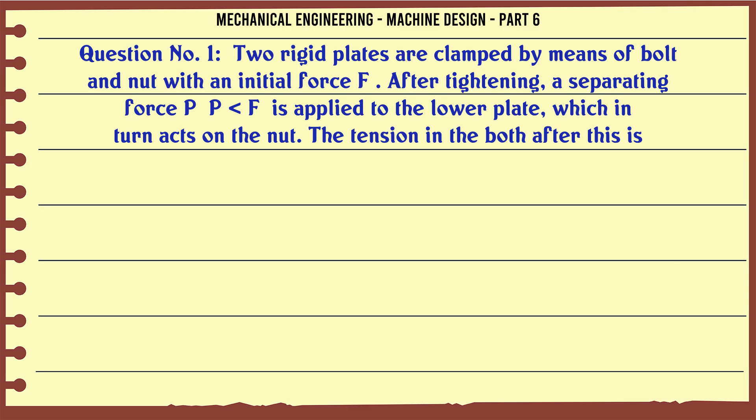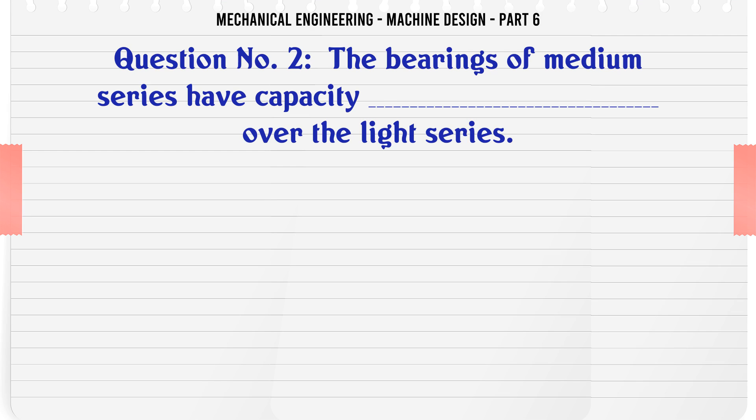Two rigid plates are clamped by means of bolt and nut with an initial force F. After tightening, a separating force P is applied to the lower plate which in turn acts on the nut. The tension in the bolt after this is: A) FP, B) FP, C) P, D) F. The correct answer is FP.